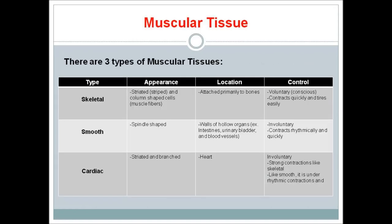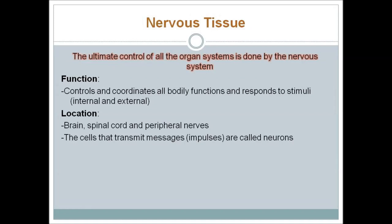Moving on to a new tissue, we come to muscular tissue. There are three types of muscular tissues: skeletal, smooth, and cardiac. Please take a moment to look over the chart for each type of muscular tissue's appearance, location, and control.